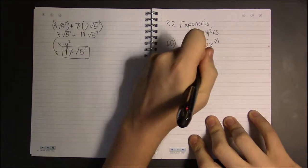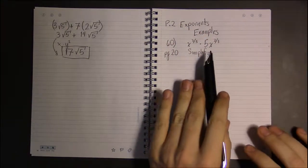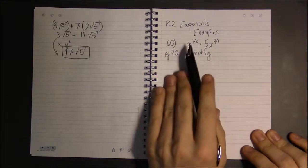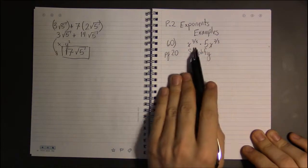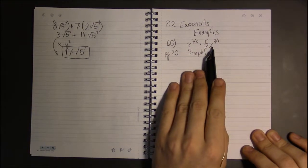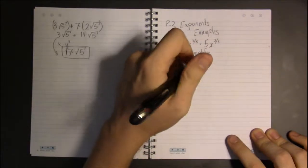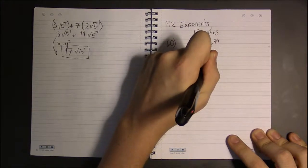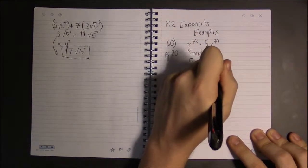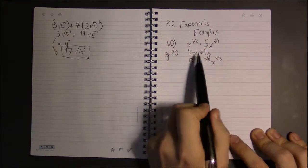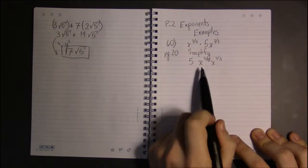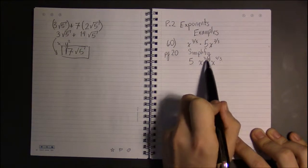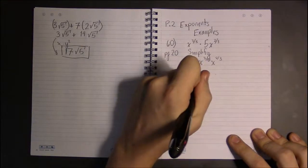The first thing we have to recognize is that the dot between the 5 and x to the 2/3 means multiplication — we're multiplying three things together: this factor, times 5, times this other factor. With multiplication we can rearrange however we like, so let's put the 5 out front, followed by x to the 3/5, and then x to the 2/3.